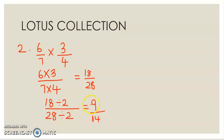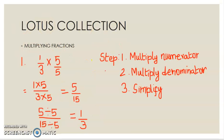We get 9 here, 14. So 9 by 14 is the answer. So for multiplying fractions, we have to know about the three steps only. First multiply numerator, then multiply denominator, then simplify. Following the steps, we have to do fractions very easy.